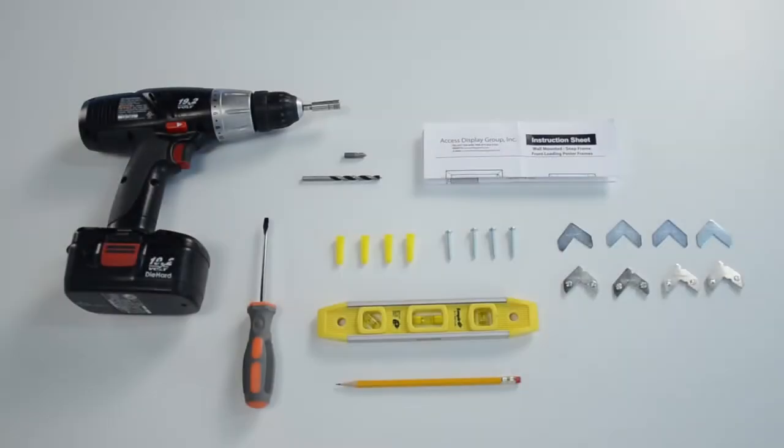The mounting hardware consists of four yellow wall anchors and four screws. You will also need a level, a pencil, and a hand drill with a quarter inch drill bit and a number two Phillips head. If you're wall mounting the snap frame to a concrete or brick surface, you need to purchase different hardware from your local hardware store.